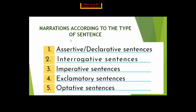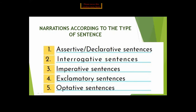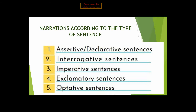Narrations are classified according to the type of sentence. There are five types of sentences. The first is called assertive or declarative. Assertive does not mean only positive — a statement can be positive as well as negative. For example, 'She is a doctor' and 'She is not a doctor' are both assertive sentences because they give information and assert or declare something.